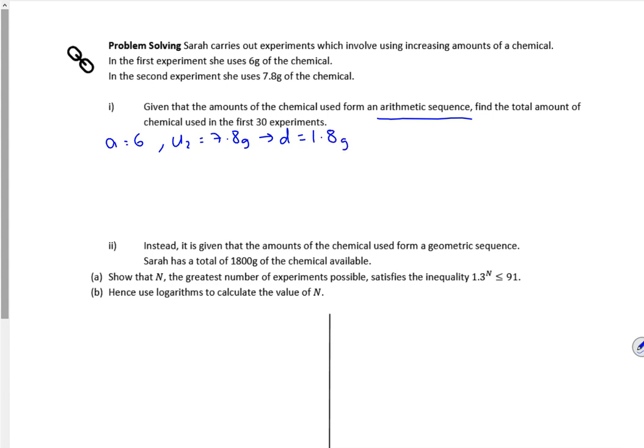So we're double checking it. Find the total amount of chemical used in the first 30 experiments. So it's not the amount of chemicals used in the 30th experiment, it's up to and including 30.